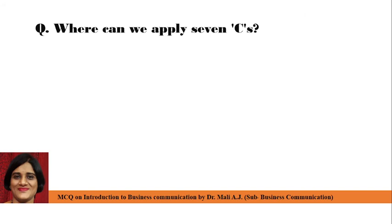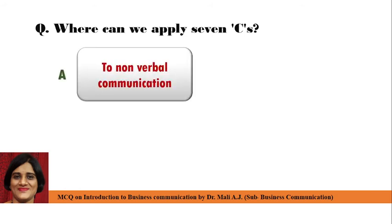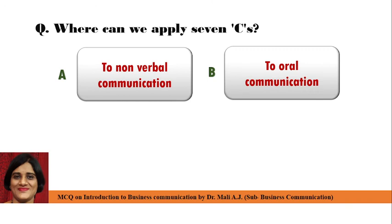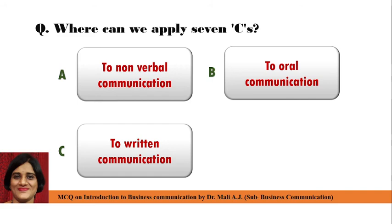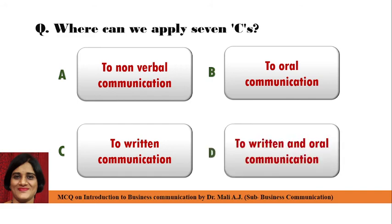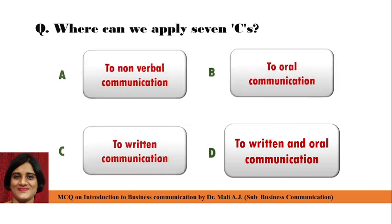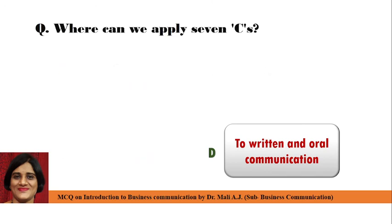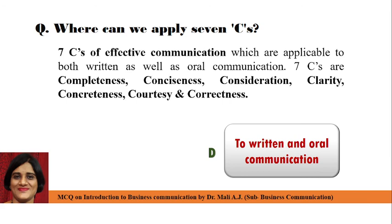Next question: Where can we apply the Seven C's? Point A: To Non-Verbal Communication, Point B: To Oral Communication, Point C: To Written Communication, and Point D: To Written and Oral Communication. Correct answer is Point D: To Written and Oral Communication. We apply the Seven C's in written and oral communication. Because the Seven C's are effective communication principles applicable to both written as well as oral communication. The Seven C's are: Completeness, Conciseness, Consideration, Clarity, Correctness, Courtesy, and Concreteness.